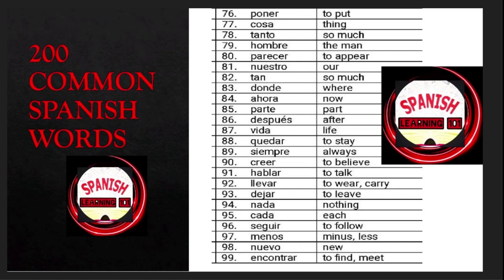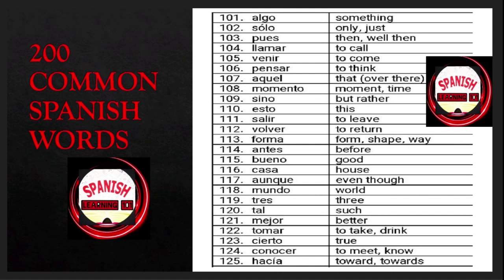Nada is 'nothing'; cada is 'each'; seguir is 'to follow'; menos is 'minus' or 'less'; nuevo is 'new'; encontrar is 'to find' or 'to meet'; algo is 'something'; solo is 'only' or 'just'; pues is 'then' or 'well then'; llamar is 'to call'; venir is 'to come'; pensar is 'to think'; aquel is 'that over there'; momento is 'moment' or 'time'; si no is 'but rather'.